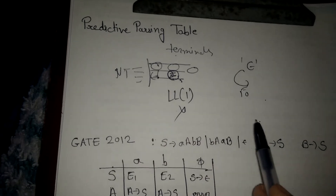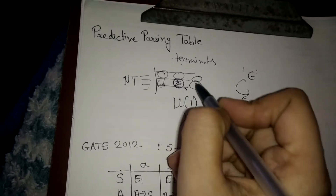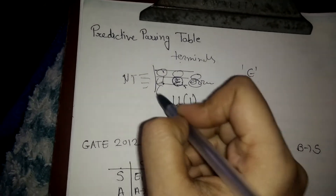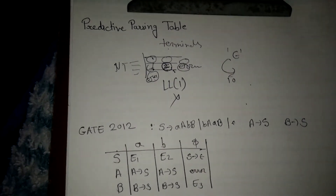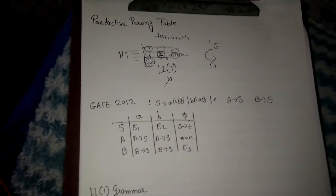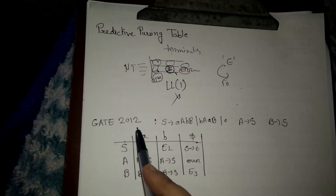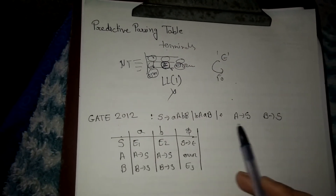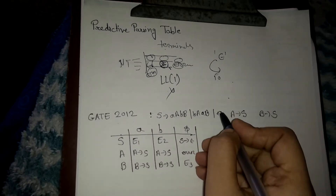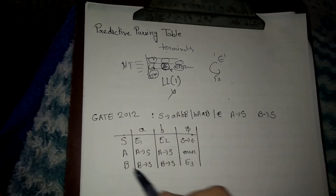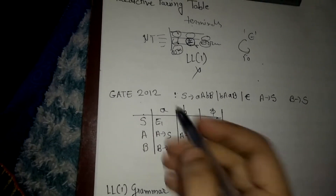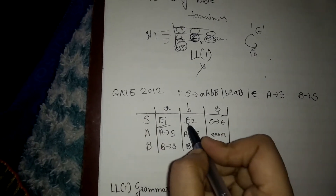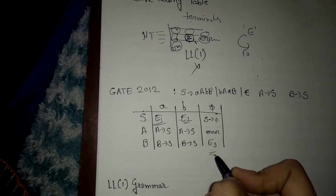If any cell is blank and has no entry, that is called an error. Now let us look at an example from GATE 2012. They have given a grammar with epsilon and a partially drawn LL(1) table, and they ask you to complete the remaining fields E1, E2, and E3.